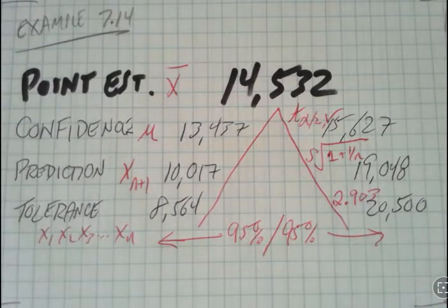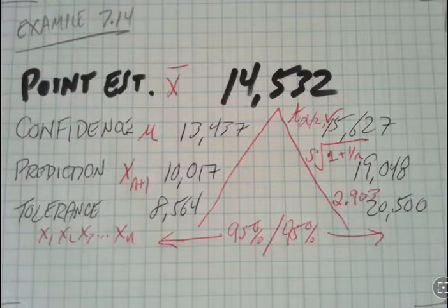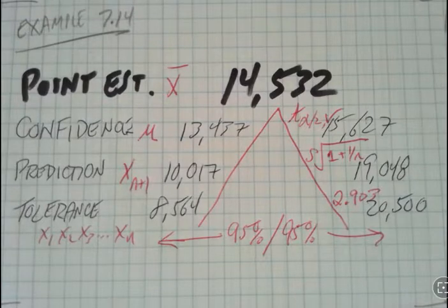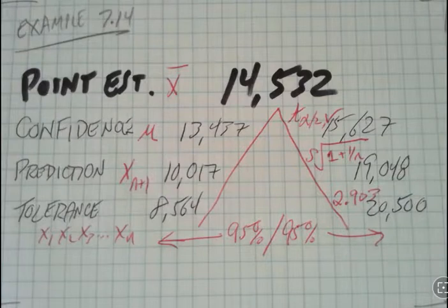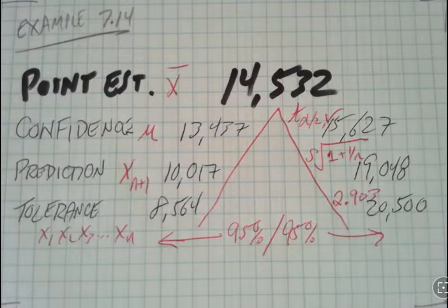I could vary either of those percentages. The confidence and prediction intervals were only based on a single percentage. What's my level of confidence in that process? 95% prediction confidence and 95% confidence of the mean. But in tolerance, I have two different percentages going on. How many of my data points will fall within the interval, and how confident am I that that is true? That double whammy of percentages widens the extreme.